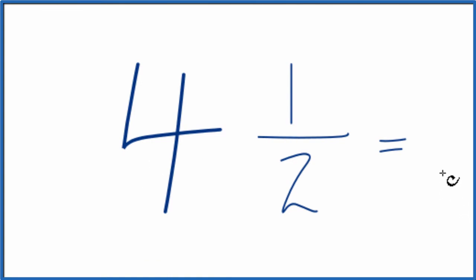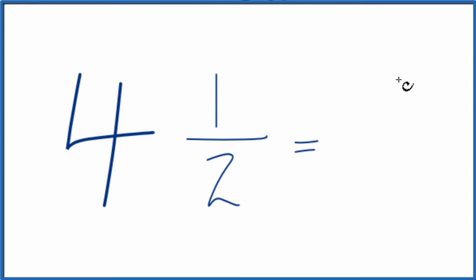If we can get this to an improper fraction, that'll make it a lot easier to find the reciprocal here for 4 and 1 half. So the way we do that, 4 times 2 is 8 plus 1, that's 9, and then we put that 9 over 2.